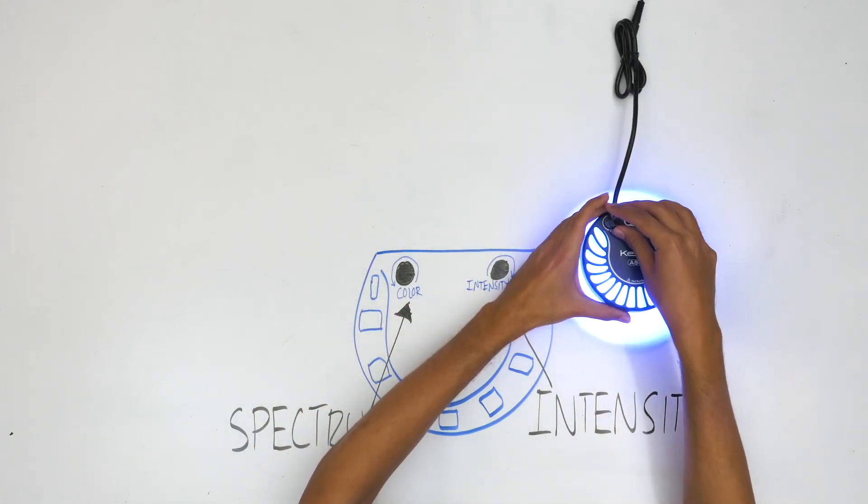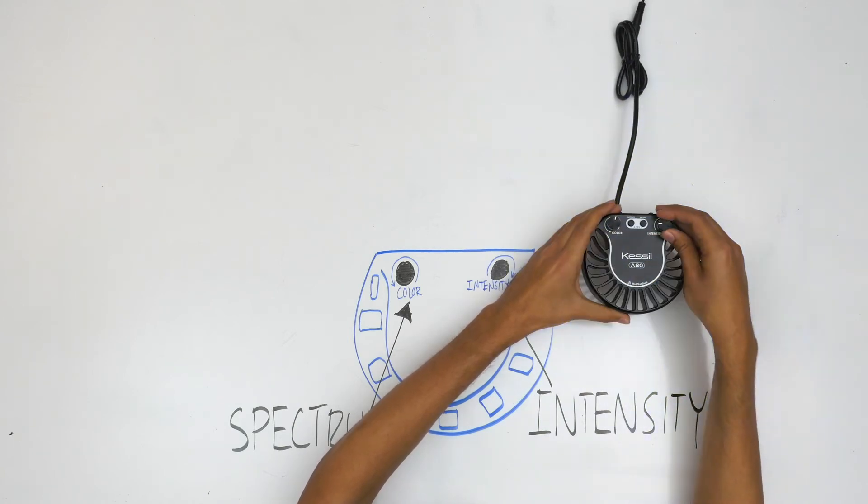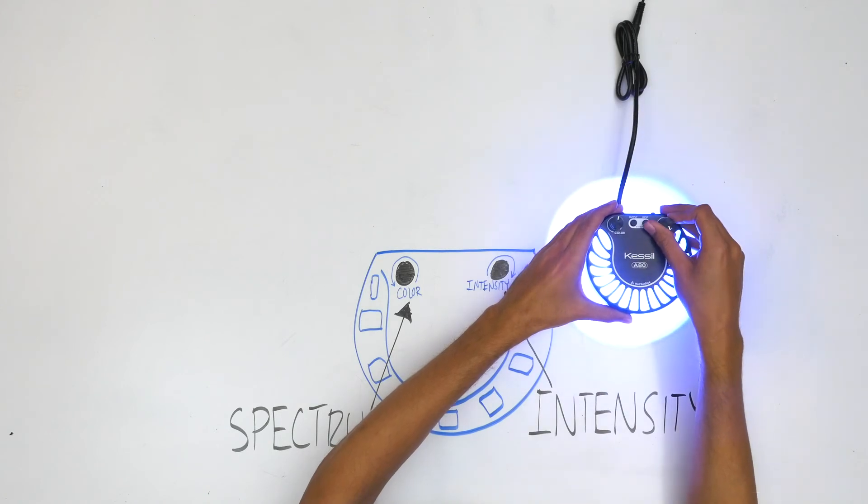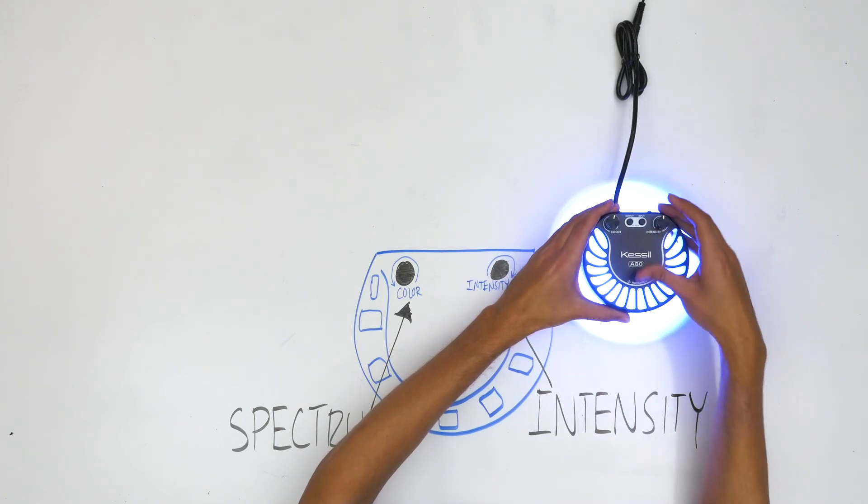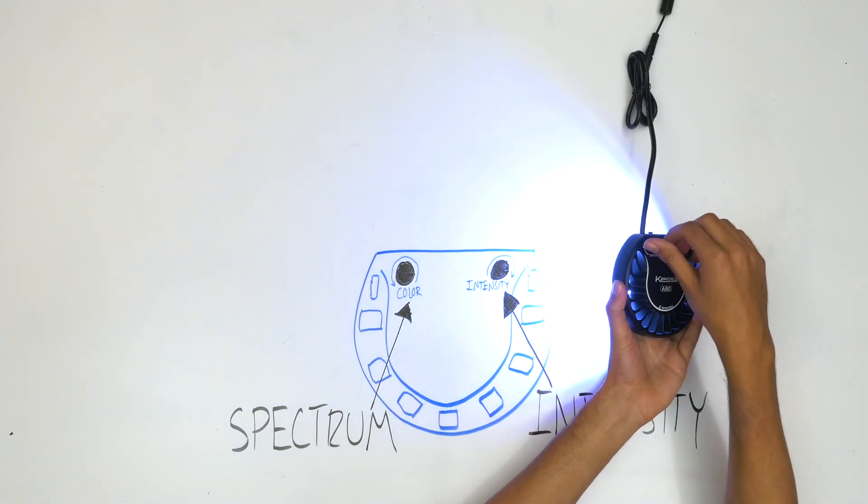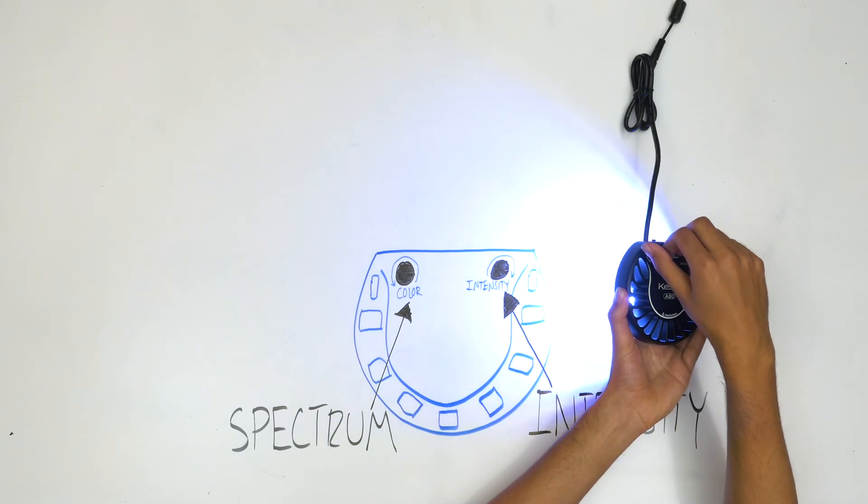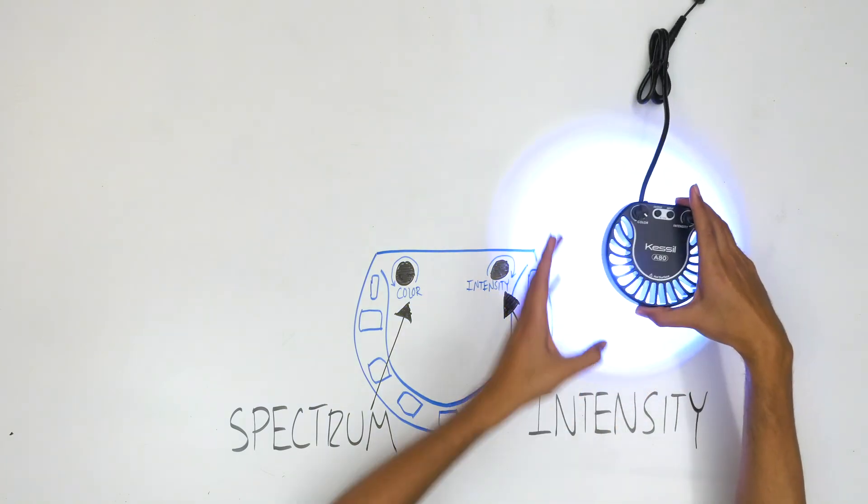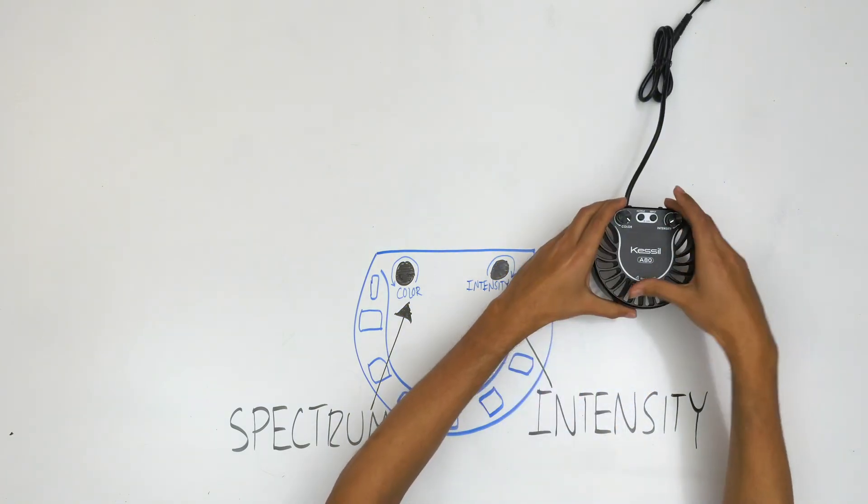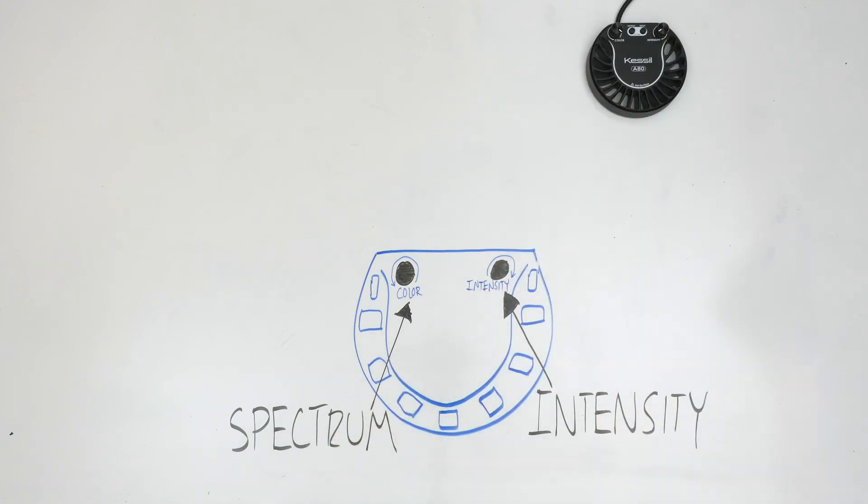Instead of varying the light intensity of multiple different channels to find the desired color and intensity mix, you can select the perfect spectrum and color with one knob and then adjust the intensity with the other. The spectrum knob allows you to explore the tuna blue range from actinic blue to sky blue and everything in between, and as we mentioned in the previous section, these two controls function independently, so you can make changes to one without compromising the other.